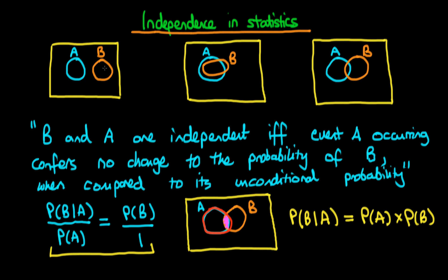I now want to take you through a few different examples of events which are independent versus events which aren't. Looking at this top left Venn diagram, this is often a situation confused for events A and B actually being independent. If we were within event A — within the space confined by this red line — there is no probability of event B occurring. In this top left case, we say that events A and B are what we call disjoint.